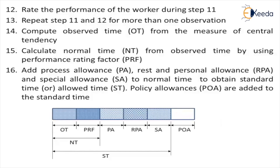Then rate the performance of the worker and repeat the steps for more than one observation. Now compute the observation time — what is the time taken by the worker for doing the elemental work. Then calculate the normal time using the performance rating factor applied to the observed time. Then add allowances — such as process allowance, rest and personal allowance, and special allowances — which will give you the standard time.